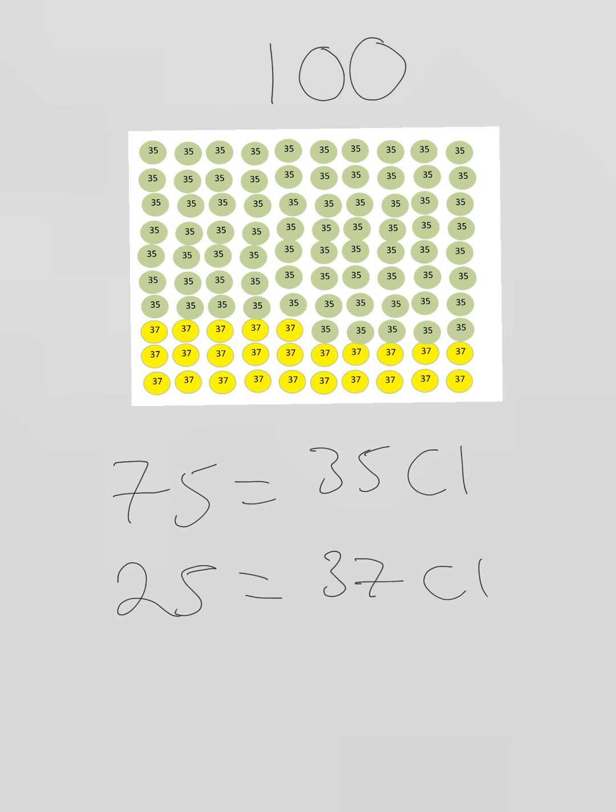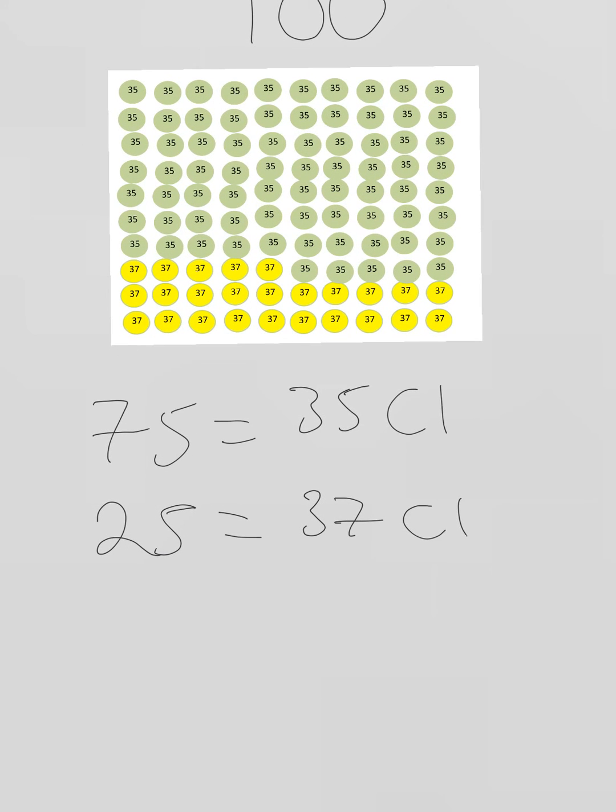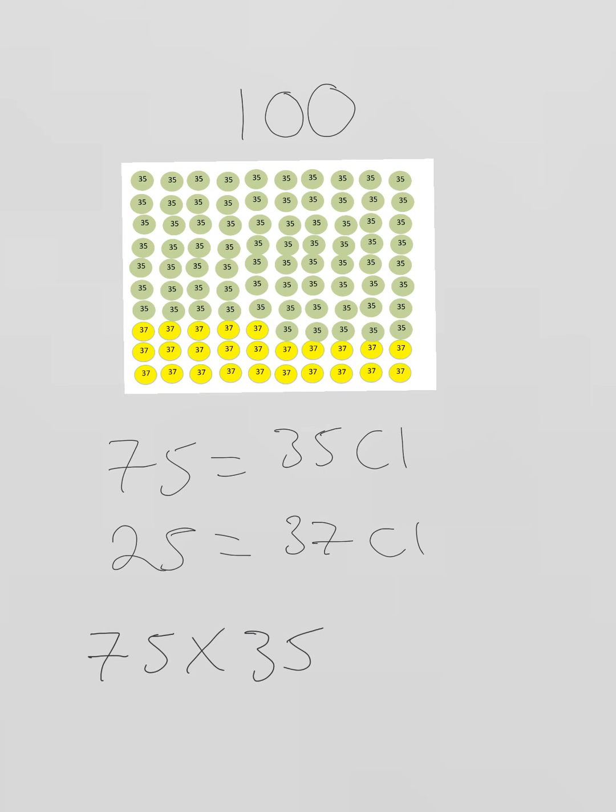So what we have to do here is use this information to calculate the relative atomic mass of chlorine. We do 75 times 35 because there are 75 particles of chlorine-35. I'm just going to put that in brackets as well.